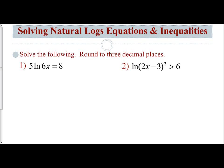What I'm going to do first is isolate my natural log. I'm going to get rid of this coefficient of 5 by dividing both sides by 5. That gives me the natural log of 6x equals 8 fifths.